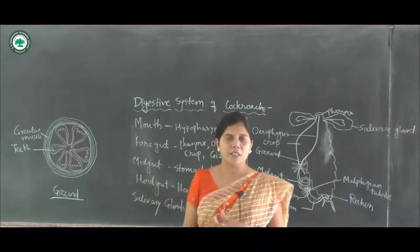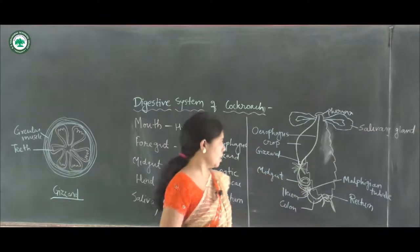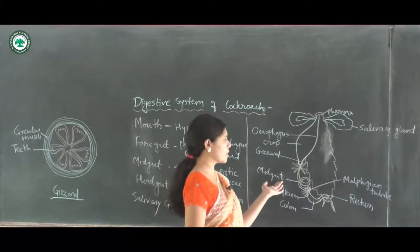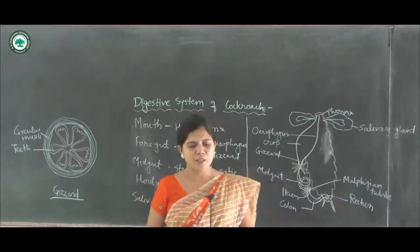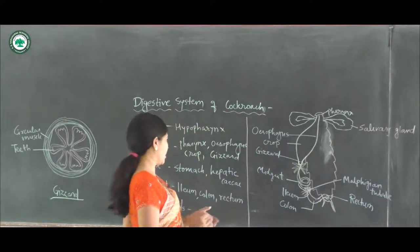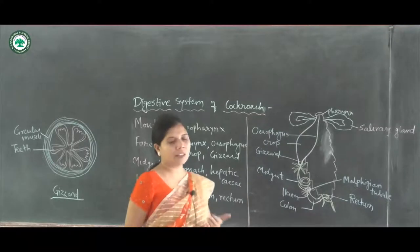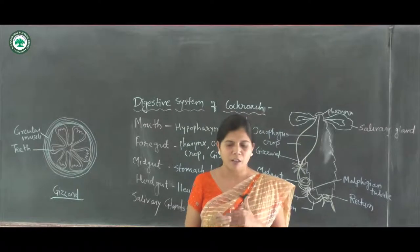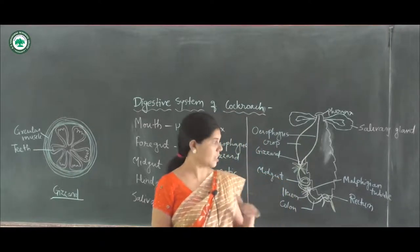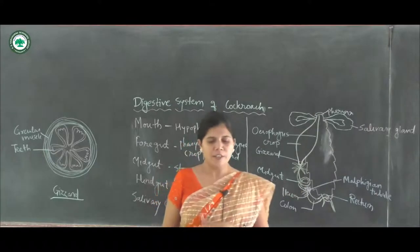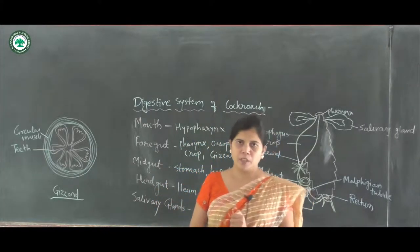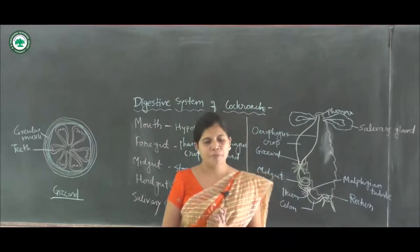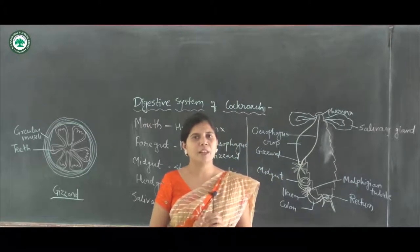The foregut is continued to the midgut. The midgut consists of the stomach and hepatic caecae. The stomach is straight, short, and narrow. It is internally lined by glandular epithelium which secretes digestive enzymes. The stomach is mainly responsible for digestion and absorption.